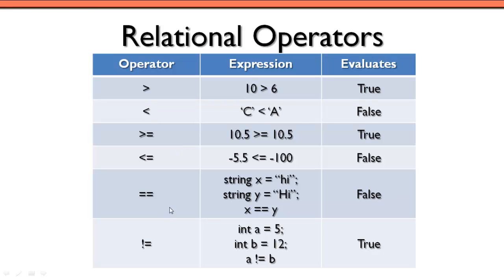And then the last relational operator we have, so we only have six of these, the last one is the not equal to, so it's the exclamation point and then the equal sign. So if we had integer value A that was assigned the value of 5, and then we have the integer value B that was assigned 12, we could see if A was not equal to B, and that would in fact be true.